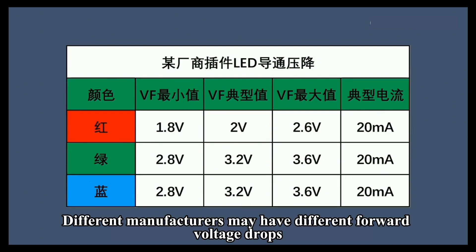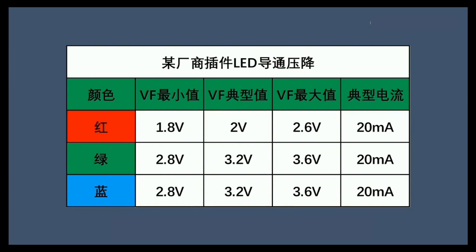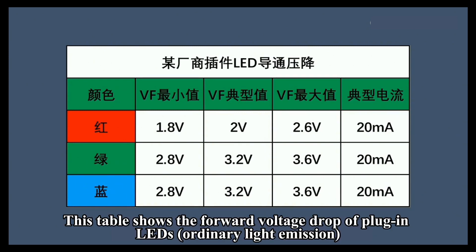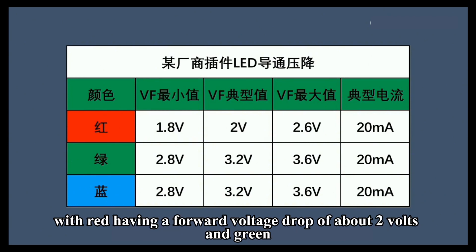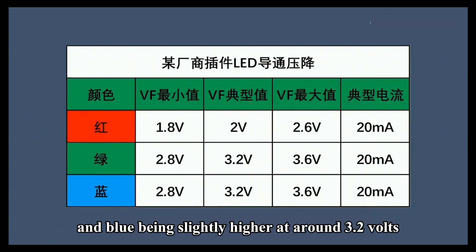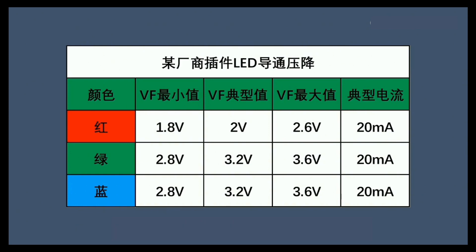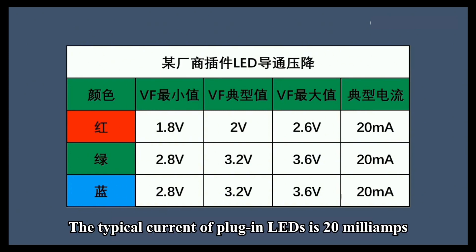Different manufacturers may have different forward voltage drops. This table shows the forward voltage drop of plug-in LEDs, for ordinary light emission, with red having a forward voltage drop of about 2 volts and green and blue being slightly higher at around 3.2 volts. The typical current of plug-in LEDs is 20 milliamps.